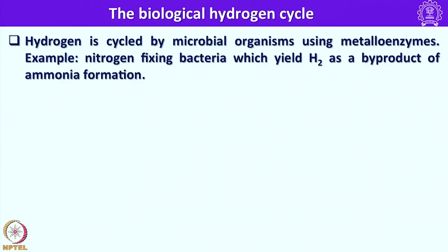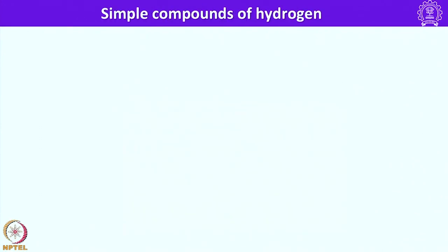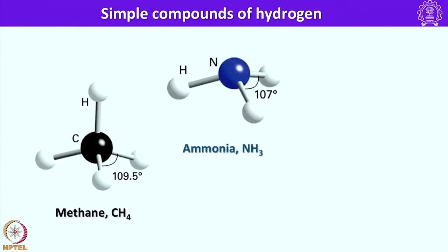What are the importance of hydrogen in biology? Hydrogen is cycled by microbial organisms using metalloenzymes. For example, nitrogen fixing bacteria which yields hydrogen as a byproduct of ammonia formation. Various biological cycles in which hydrogen is formed as a byproduct is shown here. Some of the simple compounds of hydrogen are methane, ammonia and water with their respective shapes and geometries.